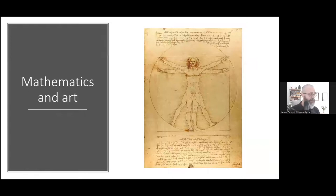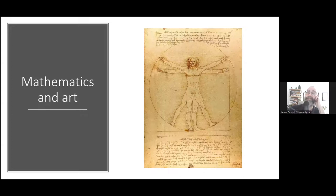Now, I think everybody knows this picture. This is by Leonardo Da Vinci, from the 1490s — The Vitruvian Man. This is where we see the beginnings of the perfect human body concept. This picture sums up the Renaissance beautifully — a period in our history where Western European society re-engaged and rediscovered the classics.